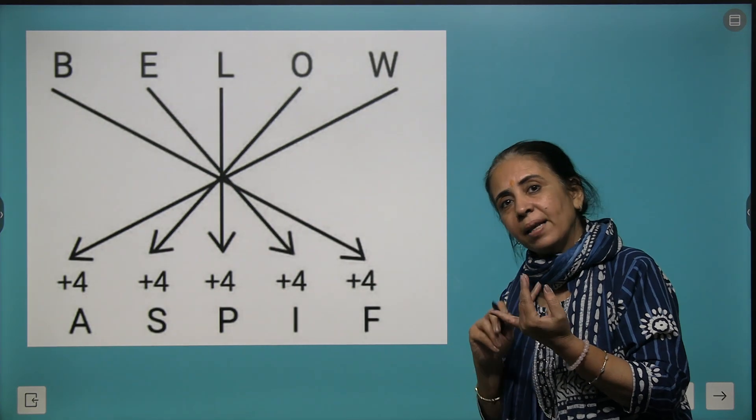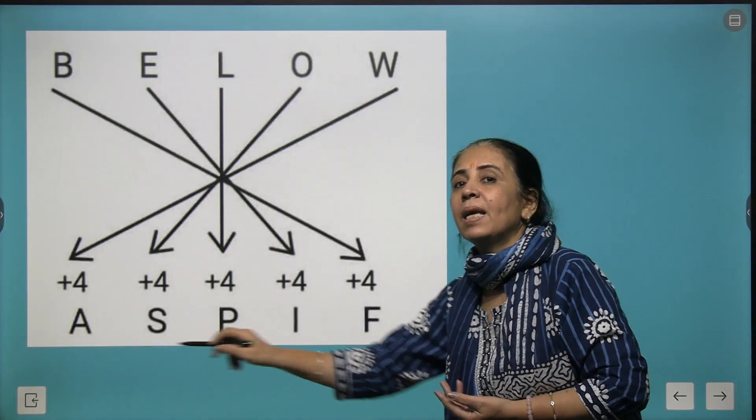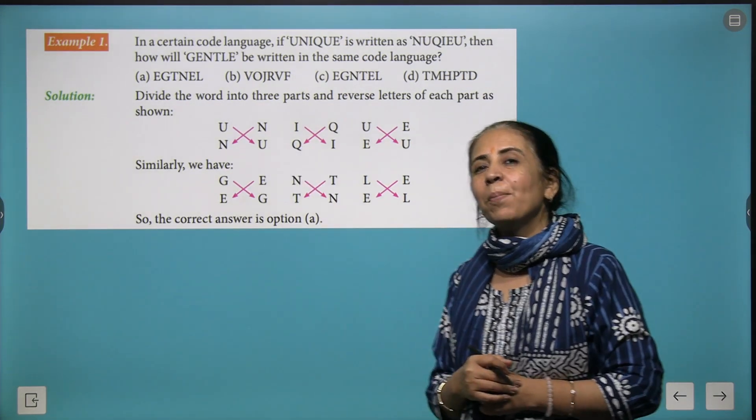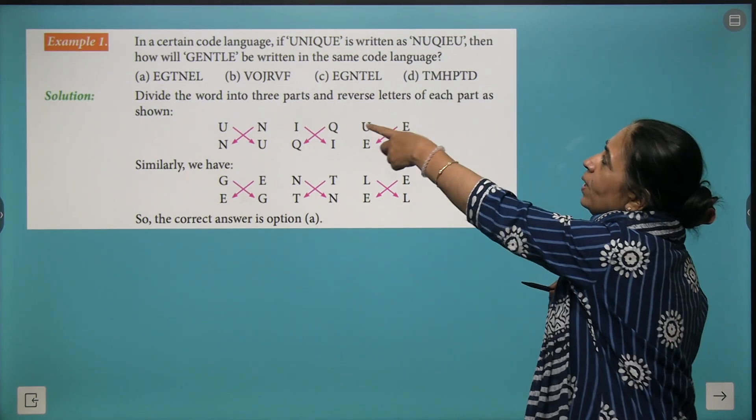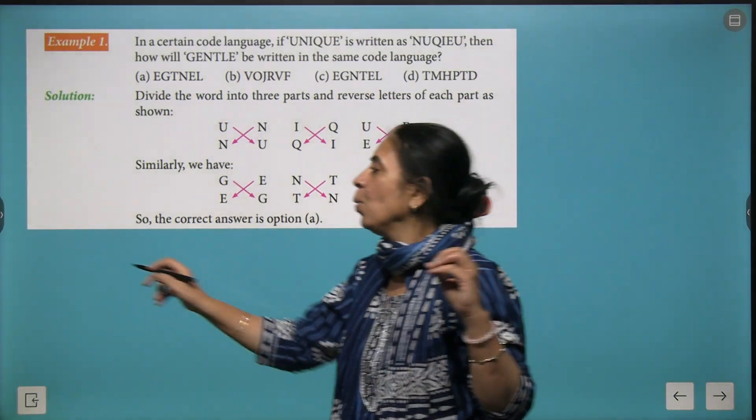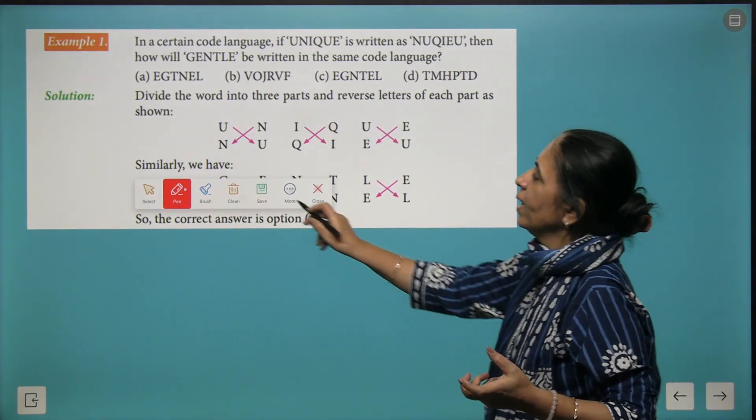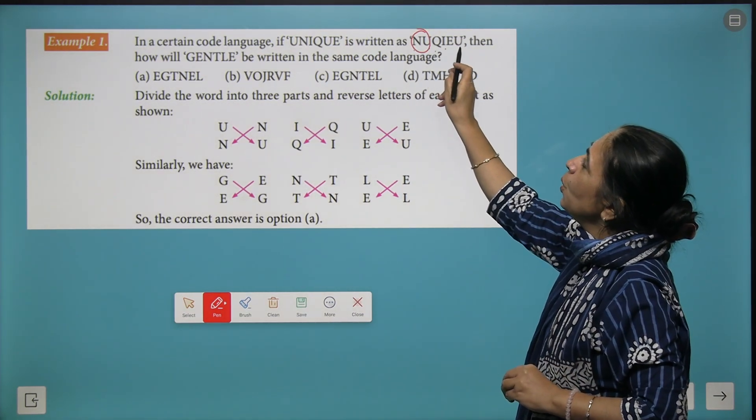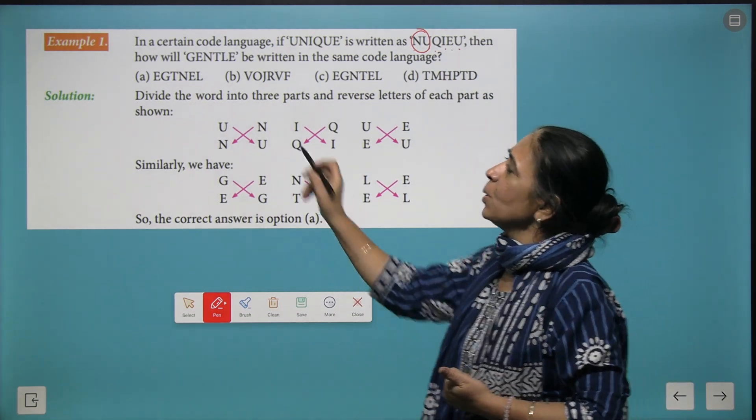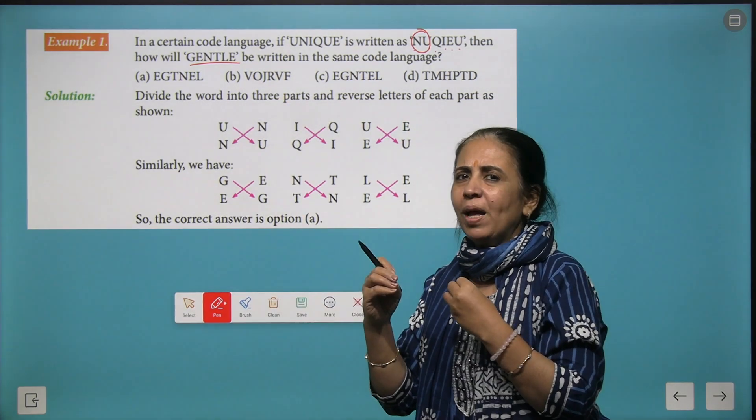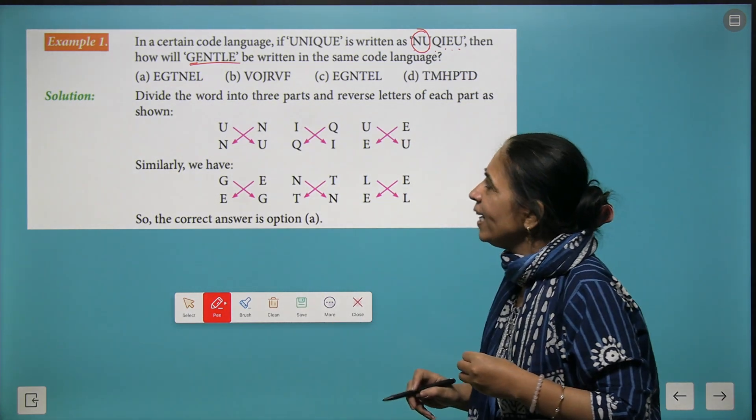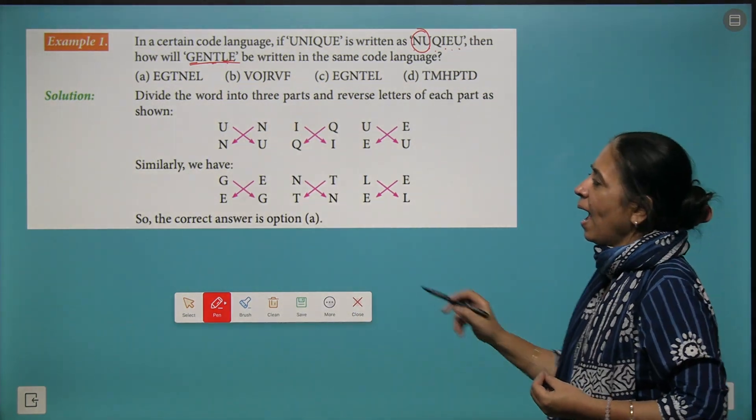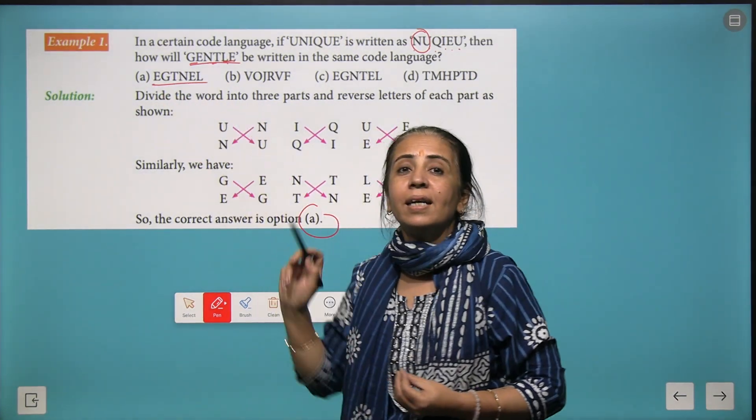Let's take more examples. In a certain code, if UNIQUE is written like this, you have to see how UNIQUE is converted. The trick is that first two alphabets are replaced: UN becomes NU, IQ stays IQ, UE becomes EU. Now write GENTLE using the same pattern: GE becomes EG, NT becomes TN, LE becomes EL. The answer is EGTNLE.